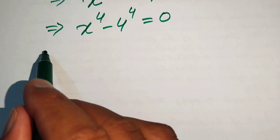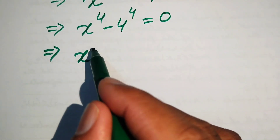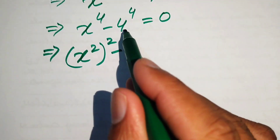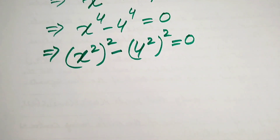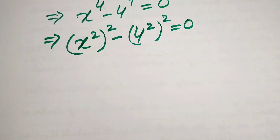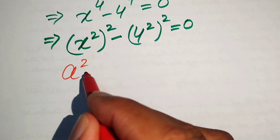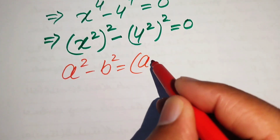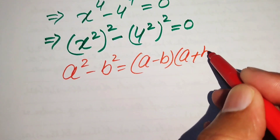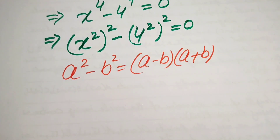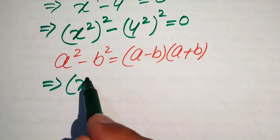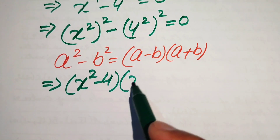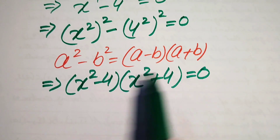We rewrite x to the power of 4 as x squared whole squared, and 4 to the power of 4 as 4 squared whole squared, so the equation becomes (x²)² minus (4²)² equals 0. Using the difference of squares identity a² minus b² equals (a minus b)(a plus b), we factor this as x squared minus 4 into x squared plus 4 equals 0.